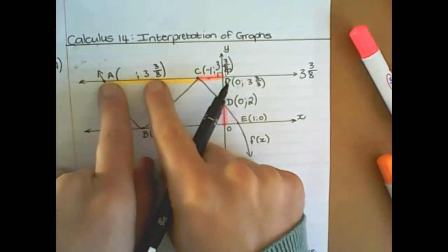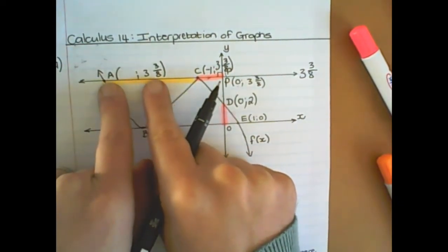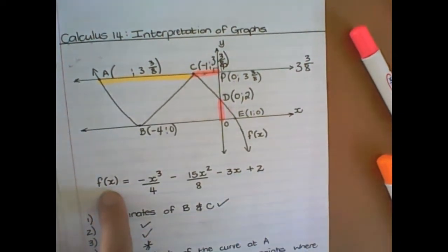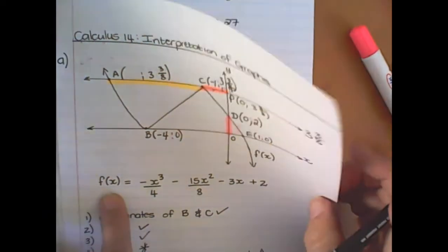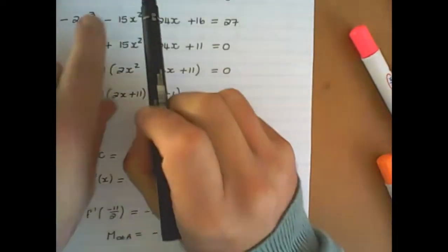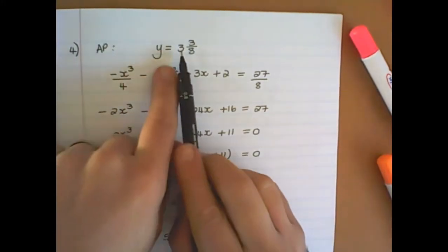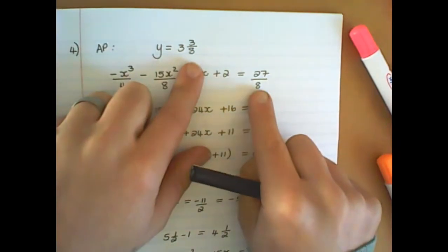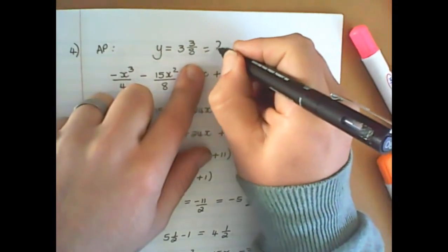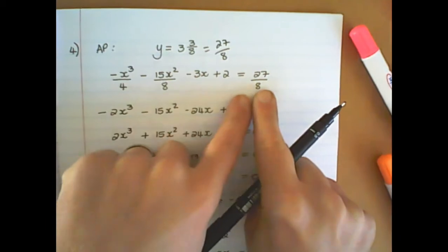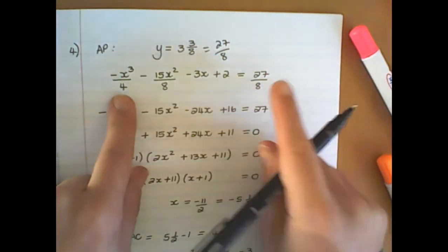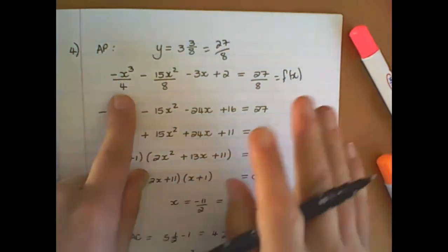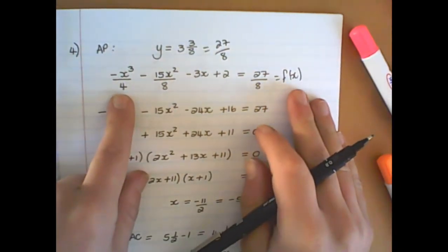So in order to find x, and I already have the y-value, I need to substitute that y-value in the place of fx, and then solve x. And I'm going to use the remainder and factor theorem. So y, I need to replace with 3 and 3-8. And that translates to 27 over 8. And notice this is equal to the original equation. This is fx. Not the first derivative. The first derivative is only used for gradient. Okay?